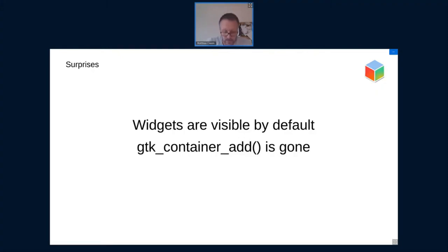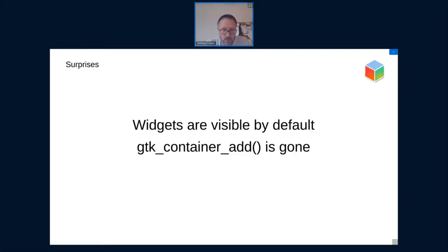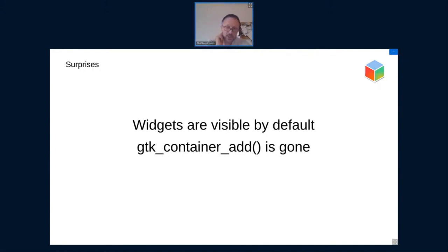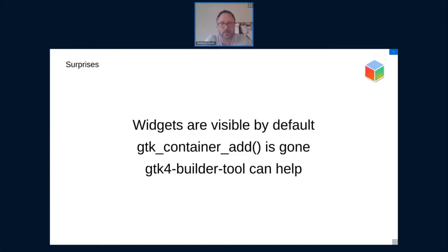Surprise number two is that GTK container is gone. This can require some work if you are creating your UIs manually. There's a certain style of UI creation code where you always call GTK container add on boxes, windows, and similar containers, and all these calls have to be replaced by their respective non-generic counterparts. For example, GTK box now has a GTK box append function, and all the widgets which just have a single child widget, like GTK window or GTK frame, have a set child API that replaces the generic container add function. The good news is if you're using GTK builder for your UI, you are not affected by that at all because the child element in UI files works just the same as before.